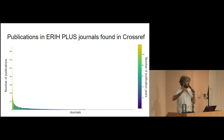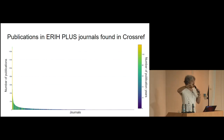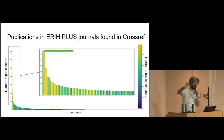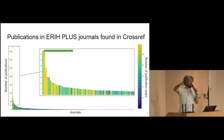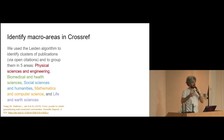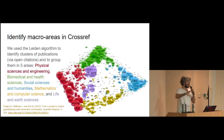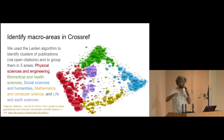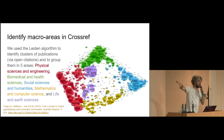We visualized the distribution of publications in Crossref for journals described by ARI+. Using the Leiden algorithm, developed at Leiden University, we identified five main macro areas of research: physical science, engineering, biomedical and health sciences, social science and humanities, mathematics and computer science, and life and earth sciences. The blue bubbles on the right define the big area of humanities and social science.